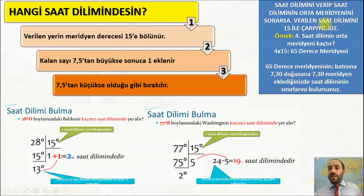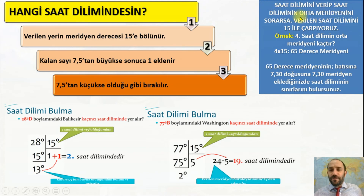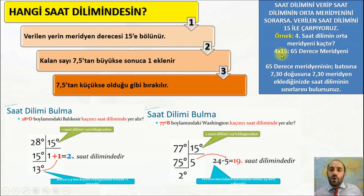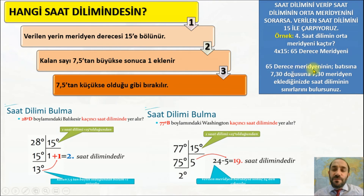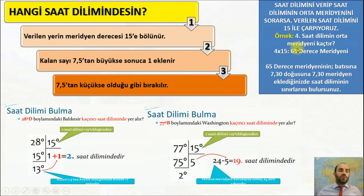Bir şey daha ekledim: saat dilimini verip sizden orta meridyeni sorarsa, verilen saat dilimini 15 ile çarpıyorsunuz. Örnek: 4. saat diliminin orta meridyeni kaçtır? 4 × 15 = 60 derece meridyeni buldunuz. Sonra 60 derecenin batısına 7.5, doğusuna 7.5 meridyen ekleyince saat diliminin sınırlarını da bulmuş oluyorsunuz.